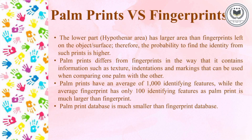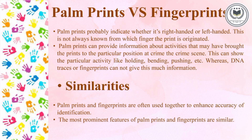Now, some differences between palm prints and fingerprints. Fingerprints have a small area whereas palm prints have a larger area, which gives a higher probability of identification of a person. In comparison to fingerprints, palm prints have textures, indentations, or other markings which make it easier to compare one palm print with another. Palm prints have an average of 1,000 identifying features, whereas fingerprints have only about 100 easily identifiable features. Palm print database is relatively small, while the fingerprint database is larger. Palm prints can indicate whether the print is from the right or left hand, but this is not always determinable from fingerprints.